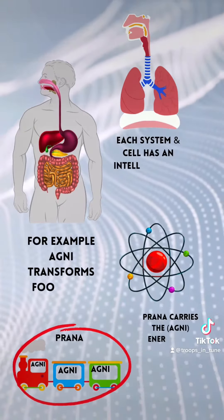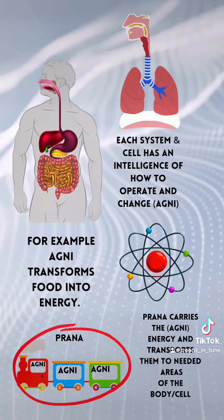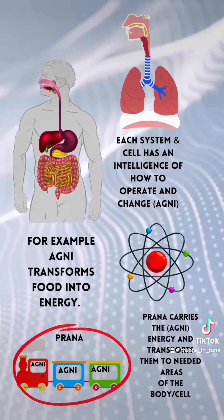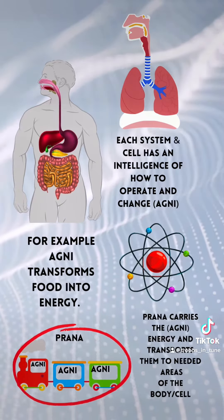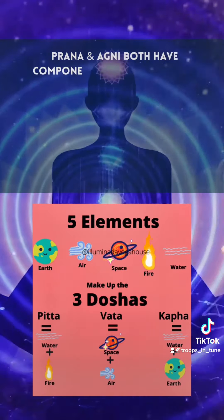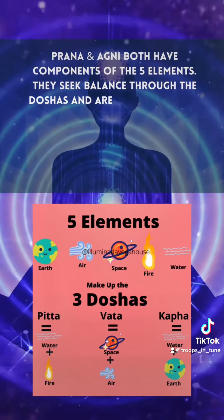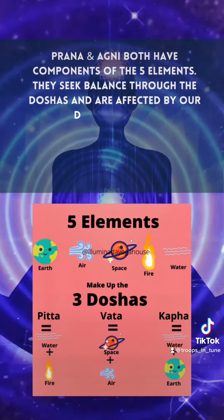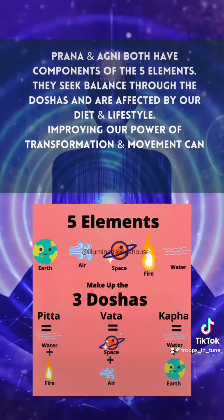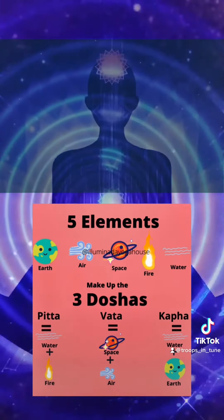Each system and cell has an intelligence of how to operate and change, which is Agni. For example, Agni transforms food into energy. Prana carries the Agni, or energy, and transports them to needed areas of the body or cell. Prana and Agni both have components of the five elements. They seek balance through the doshas and are affected by our diet and lifestyle. Improving our power of transformation and movement can help give our bodies needed nourishment.